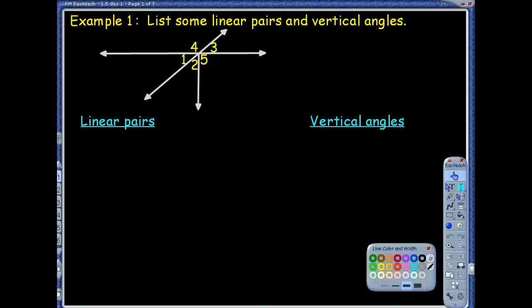Example 1 says list some linear pairs and vertical angles. So we have a picture and one thing to note which we haven't seen a lot yet until just this section is that we're actually naming angles with numbers now. That's a nice quick easy way, not a lot of writing. But we only do that if they have the numbers provided. Let's start with linear pairs.